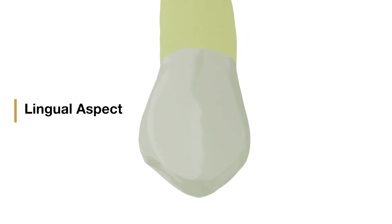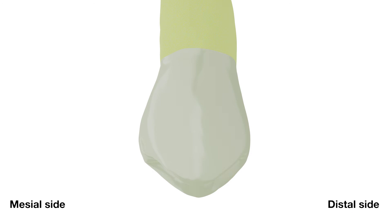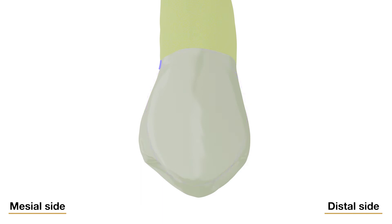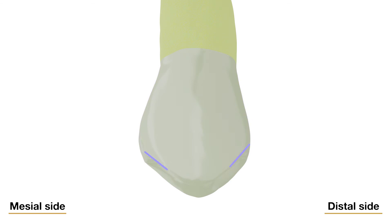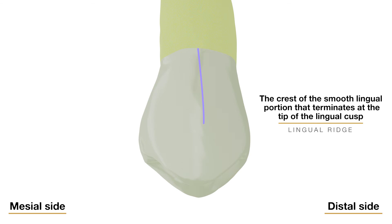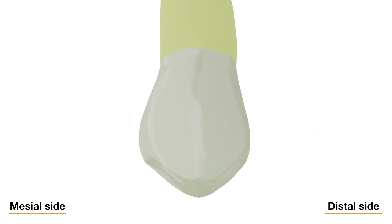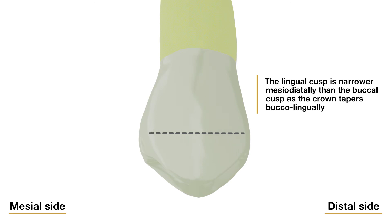Now let us move on to the lingual aspect. From the lingual aspect, the gross outline of the maxillary first premolar is the reverse of the gross outline from the buccal aspect. The cervical line is regular with slight curvature towards the root and the crest of curvature centered on the root. The lingual cusp is smooth and spheroidal from the cervical portion to the area near the cusp tip. The mesial and distal outlines of the lingual portion of the crown are convex and straighten out as they join the mesial and distal sides of the lingual root at the cervical line. The cusp tip is pointed, with mesial and distal slopes meeting at an angle of about 90 degrees. The lingual cusp is narrower mesiodistally than the buccal cusp as the crown tapers buccolingually. Due to this, it is possible to see part of the mesial and distal surfaces of the crown and root from the lingual aspect.